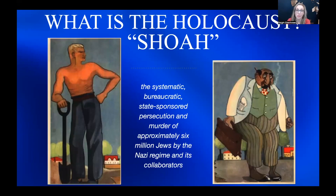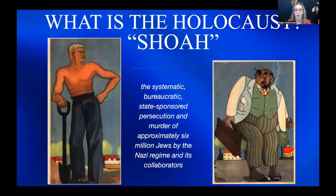The Holocaust is also called the Shoah. It's a Hebrew word meaning destruction. It was the systematic, bureaucratic, state-sponsored persecution and murder of approximately 6 million Jews by the Nazi regime and its collaborators. In other words, it was an organized, official, government-supported ill-treatment and murder of approximately 6 million Jews by the Nazi regime and their partners.